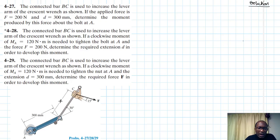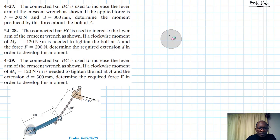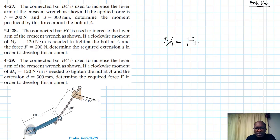Let's add more details to this wrench so that we can solve all the problems. To start with, we know that moment using the scalar analysis is equal to F times d, where F is the force and d is the lever arm, and the two are supposed to be perpendicular to each other.